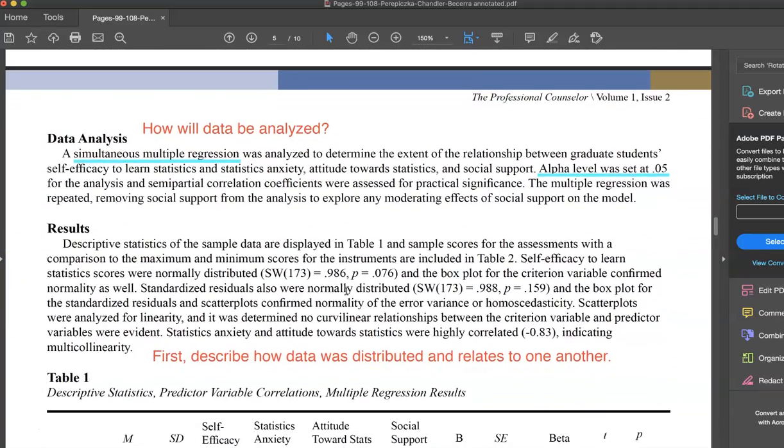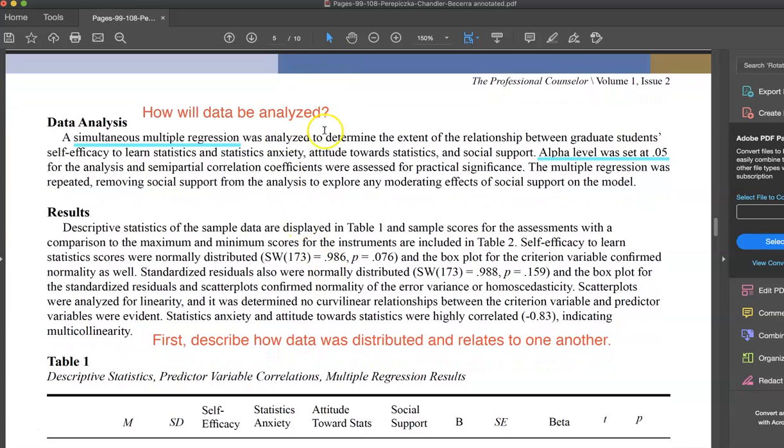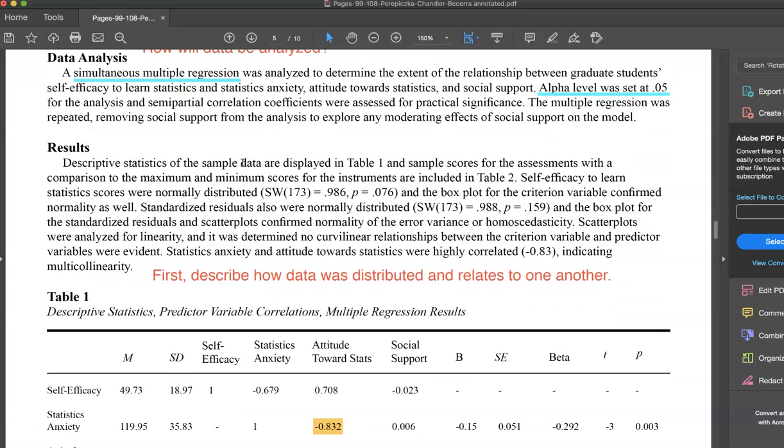Then they talk about data analysis. In this case, they were trying to see if the three independent variables would predict the dependent variable. So in this case, because they were scaled numbers, they did a multiple regression, which was completely appropriate.